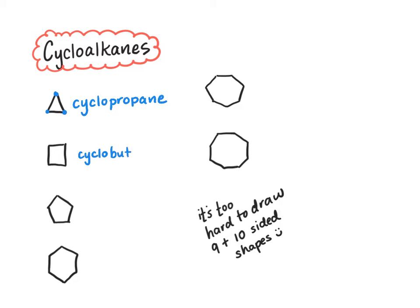So we have cyclopropane, cyclobutane, cyclopentane, cyclohexane. Those are the most common ones that you'll be dealing with up until a six-membered ring.